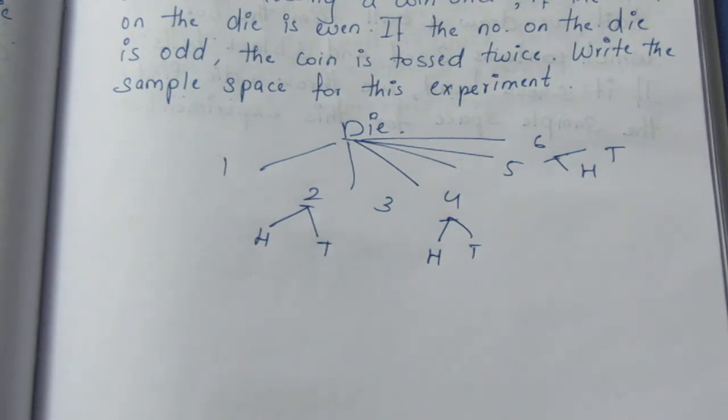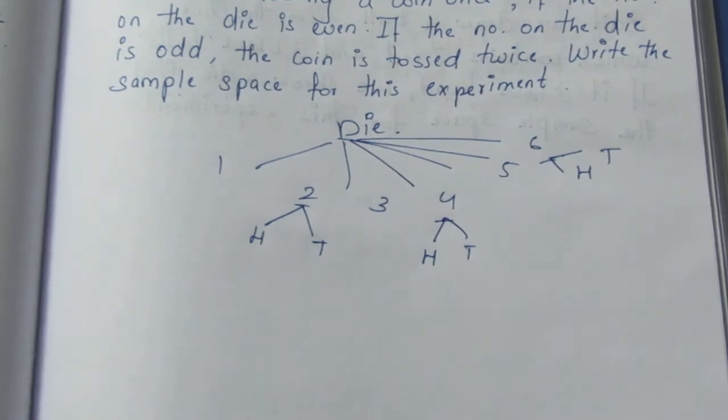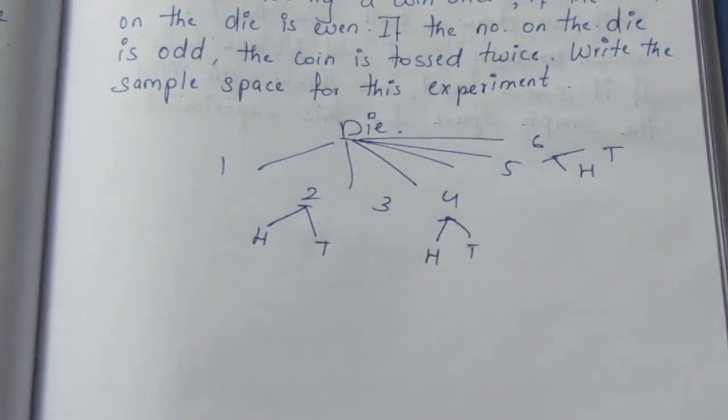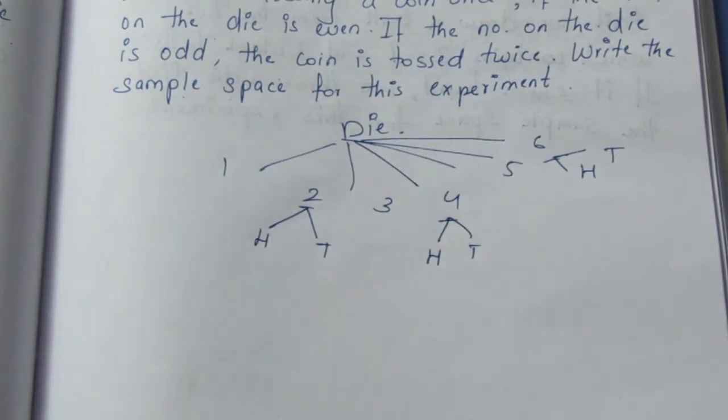When you see sample space, if the number on the die is odd, it is 1, 3, 5 and the odd number. And the odd number is called, a coin is tossed twice. That's why 2 coins are tossed. One coin is tossed twice. Sample space is the same.